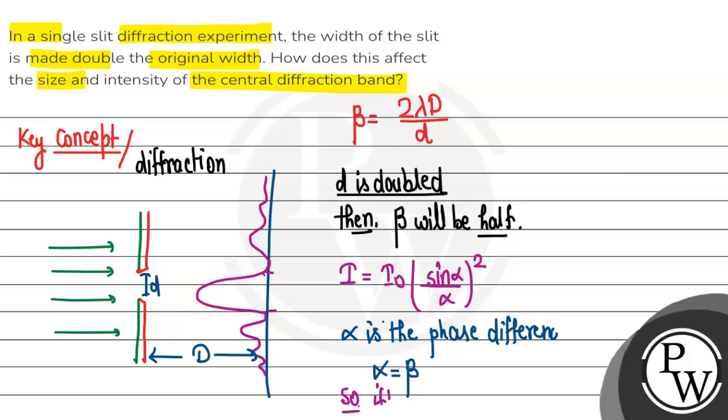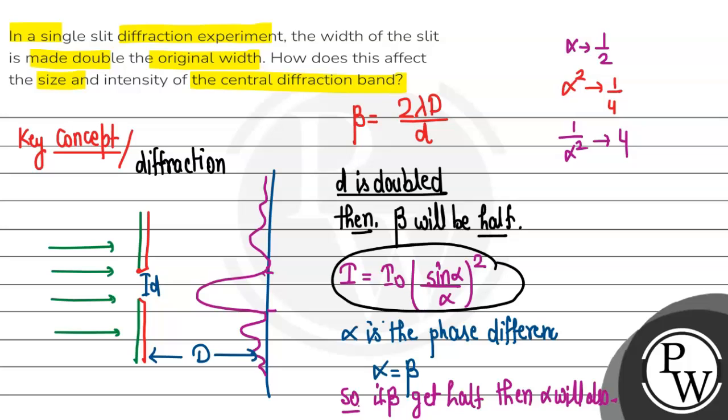So if beta gets half, then alpha will also half. Then the intensity will be 4 times now. So this is the answer for this question. I hope you understand it well. Best of luck, thank you.